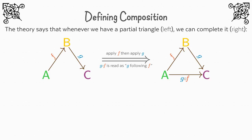This makes sense: if we can get from station A to station B by taking the F train, and we can get from station B to station C by taking the G train, then we can get from station A to station C by taking the G train after we take the F train — or another way of saying that: the G train following the F train.